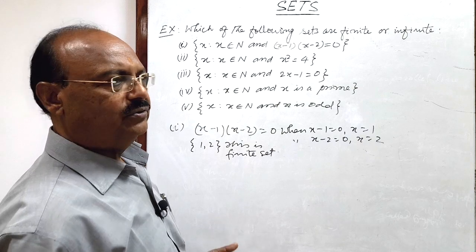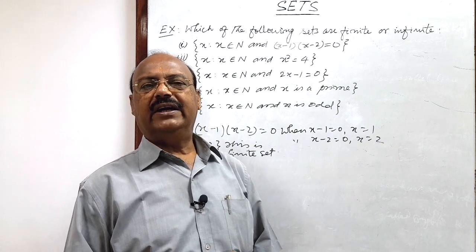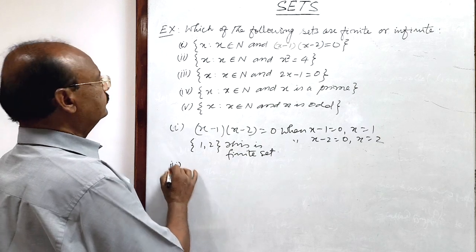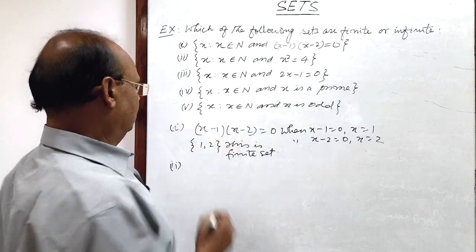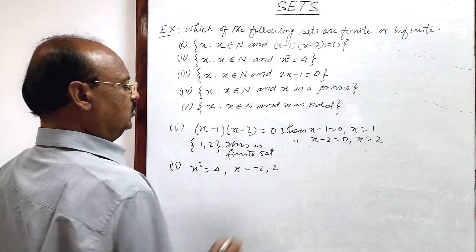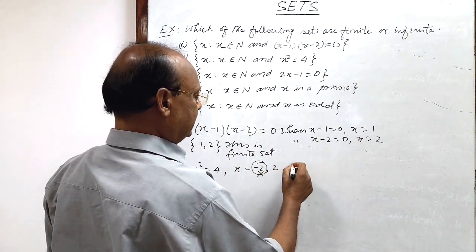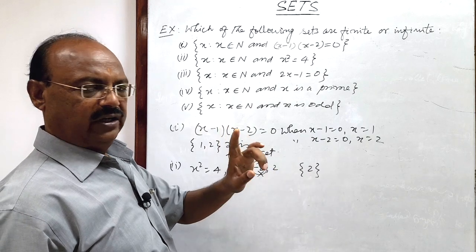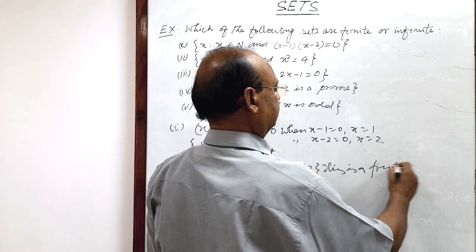We just find out the elements of the set, and then we can understand whether the number of members is finite or not. Second question: the set of x such that x is a natural number and x² = 4. If x² = 4, then x = ±2, but since x must be a natural number, x = −2 is not acceptable. So this set consists of only the element {2} — it is a singleton set, and therefore a finite set.